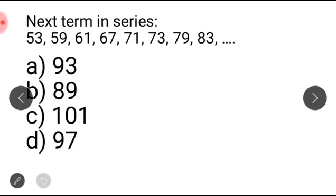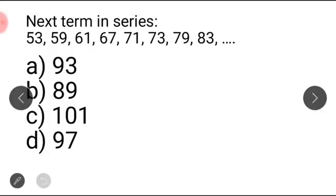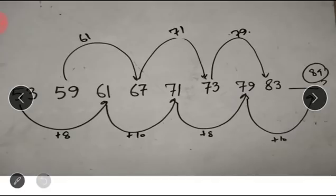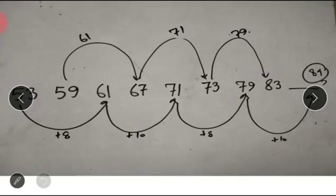The next term in the series: 53, 59, 61, 67, 71, 73, 79, 83. When a series sometimes increases or decreases without a constant difference between two terms, it can be a mixed series. We look at the differences: 53 to 61 is plus 8, 61 to 71 is plus 10, 71 to 79 is plus 8, 79 onwards plus 10.